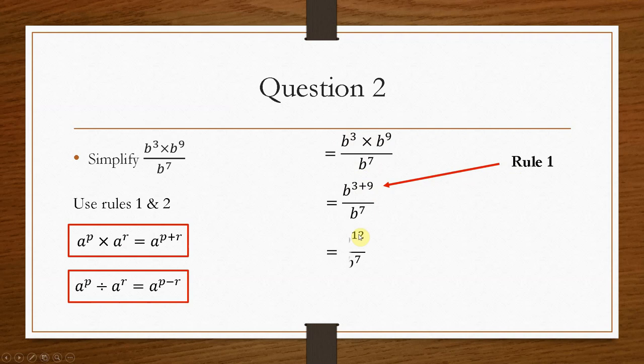So we get b³ times b⁹, which is b to the power 12 divided by b to the power 7. Now, this is when rule 2 is used, because we are dividing the indices. So if we divide indices, we take the values away. So it's top take away the bottom. So your final answer becomes b to the power 5.